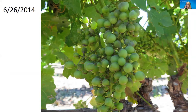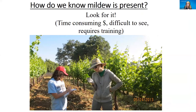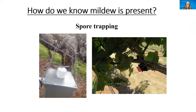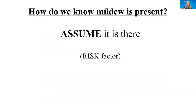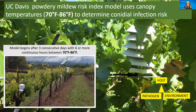A few weeks later, with optimal conditions for mildew to thrive, this is what we see. So how do we know mildew is present? We look for it, but I've just told you how difficult it is to see — it requires training and is time-consuming. We do have spore trapping as an option, and that's a great tool to know if mildew is present. But for most of us, we are risk averse, especially with mildew, because we know even a small amount can cause off flavors in wine. So we assume it is there, and we use the powdery mildew risk index model to determine conidial infection risk.